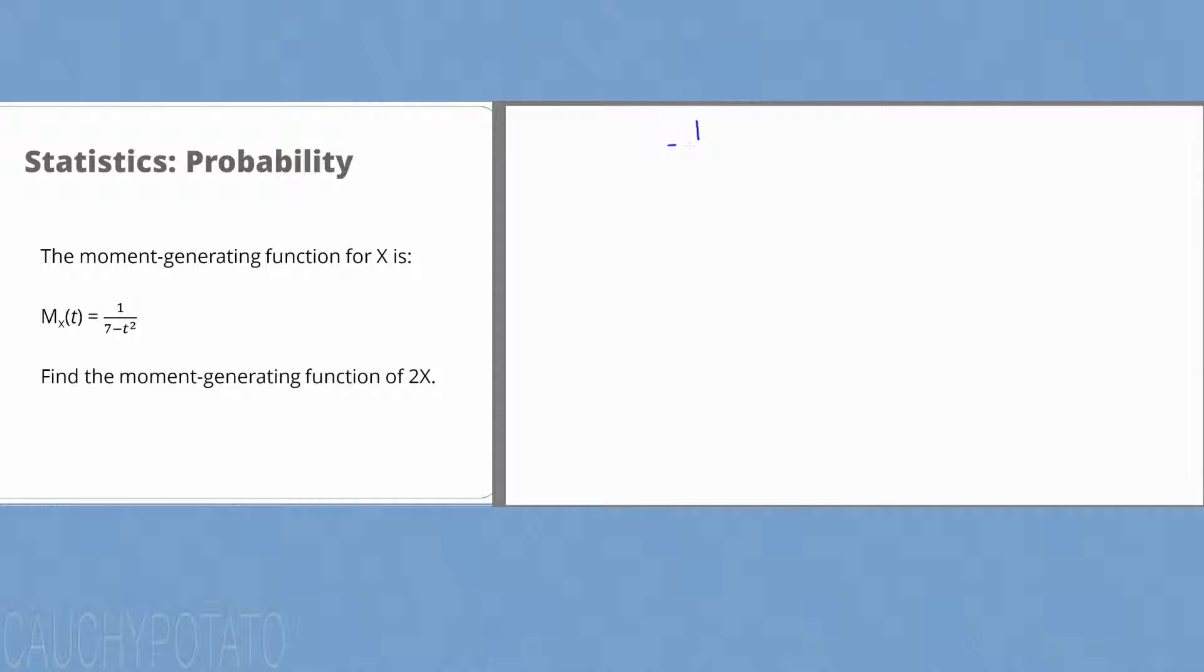So we're given the moment generating function of x, 1 over 7 minus t squared. The moment generating function has the form M_x(t) equals expected value of e to the tx.